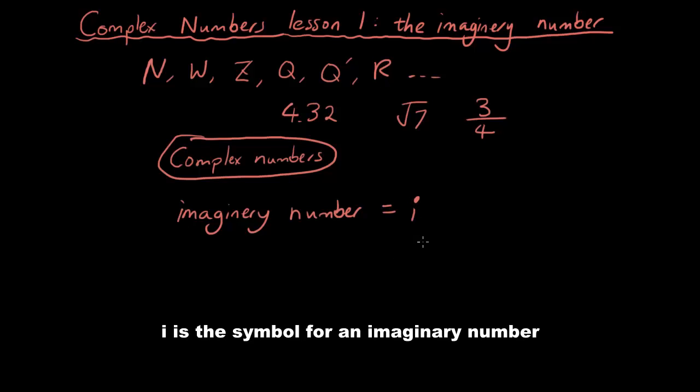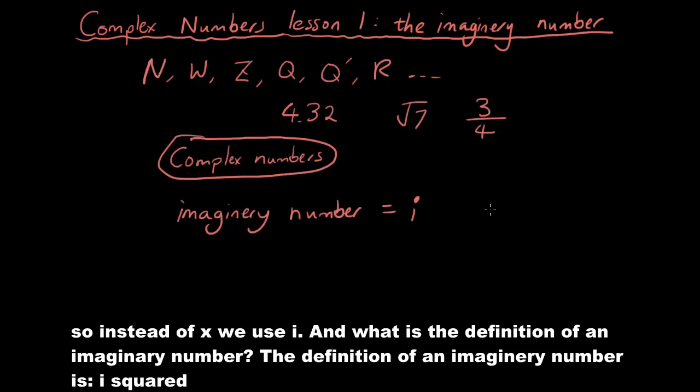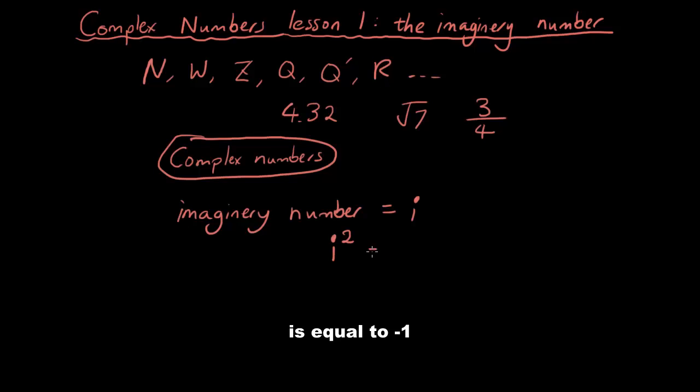Imaginary number which is equal to i. i is the symbol for an imaginary number. So instead of x, we use i. And what is the definition of an imaginary number? The definition of an imaginary number is i squared is equal to negative 1.